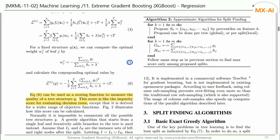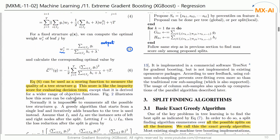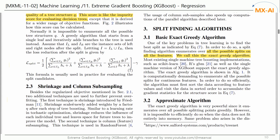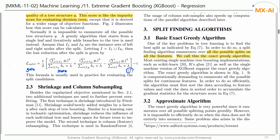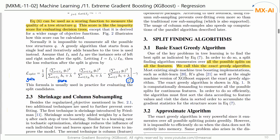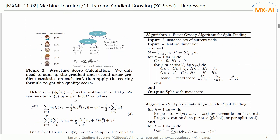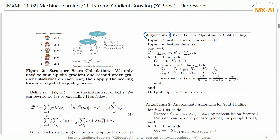Equation 5 measures the output values of each leaf node in the tree used in the previous video. Equation 7 is the formula for calculating the similarity score and the gain. Using these formulas, a standardized algorithm is presented. In this video, we will analyze this algorithm in detail.